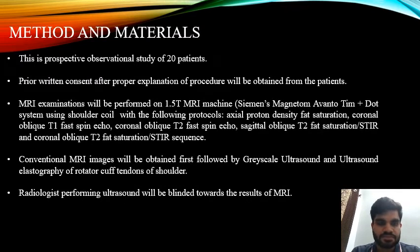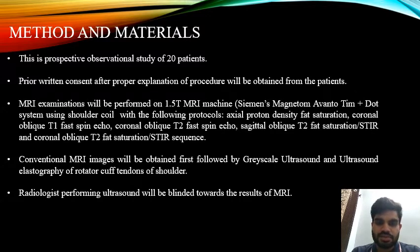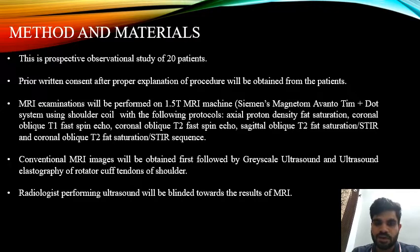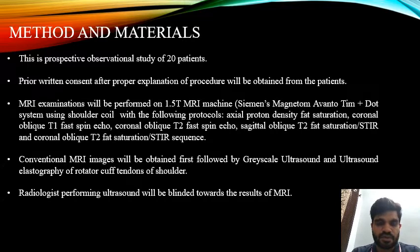Methods and materials. This is a prospective observational study of 20 patients. Prior written consent after proper explanation of procedure was obtained from the patients. MRI examination was performed on a 1.5 Tesla MRI machine — Siemens Magnetom Avanto Tim Dot system — using shoulder coil with the following protocols: axial proton density fat saturation; coronal oblique T1; coronal oblique T2; sagittal oblique T2 fat saturation/STIR; and coronal oblique T2 fat saturation. Conventional MRI images were obtained first, followed by grayscale ultrasound and ultrasound elastography of rotator cuff tendons of the shoulder.